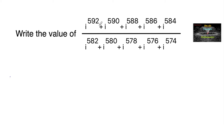We need to find the value of i to the power of 590 plus i to the power of 588, and so on up to i to the power of 584, divided by i to the power of 582 and so on up to i to the power of 574.